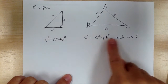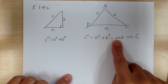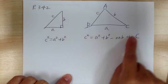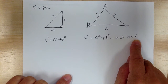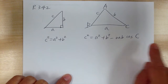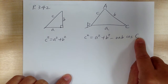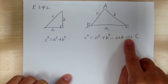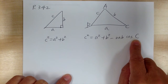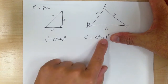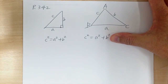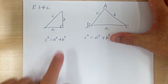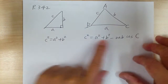And the Pythagorean theorem is a special case of this. So look at what happens when angle C is 90 degrees. When angle C is 90 degrees, cosine of 90 degrees is 0, so that term is gone, and that's where the Pythagorean theorem came from. So this is a special case.